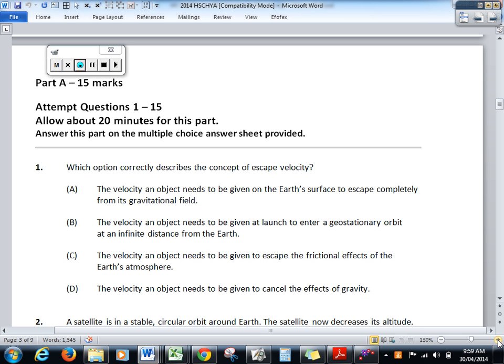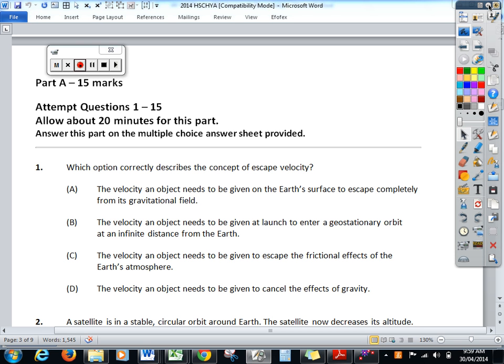Has escape velocity got anything to do with geostationary orbits? No. And a geostationary orbit is not an infinite distance away. It's 35,000 kilometres away from the surface of the Earth. C, the velocity an object needs to be given to the frictional effects of atmosphere. That's harping to orbital decay. It's got nothing to do with escape velocity. So this one here was a warm-up and obviously it's just meant to be A.